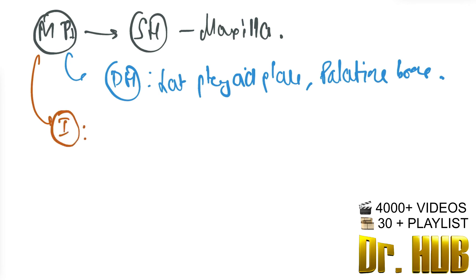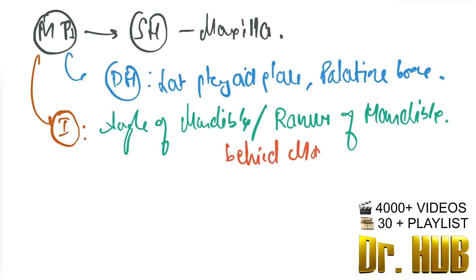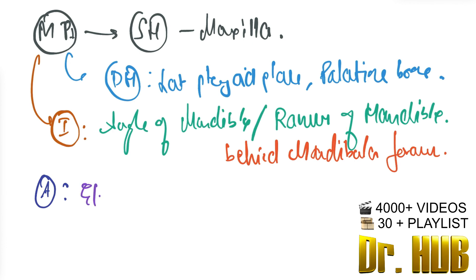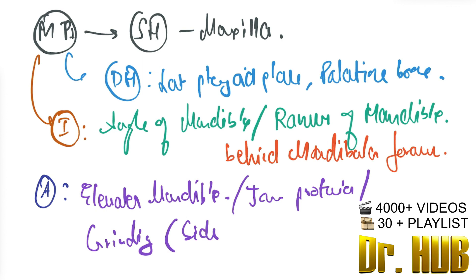The insertion of the medial pterygoid is the angle of the mandible and the ramus of the mandible, behind the mandibular foramen. The actions are: it elevates the mandible, provides jaw protrusion, and grinding — side-to-side movements.